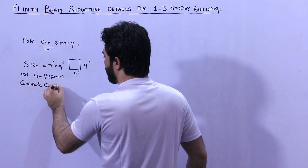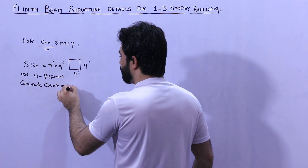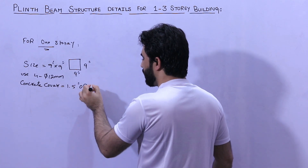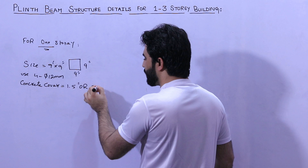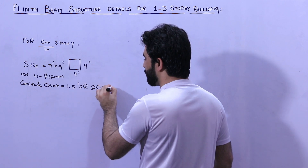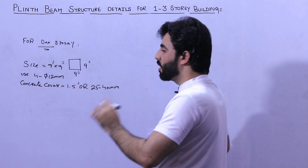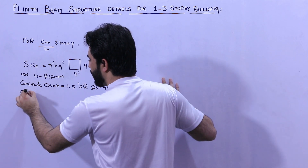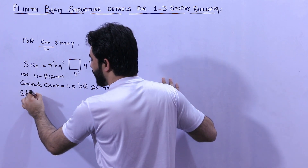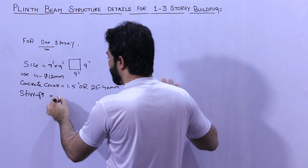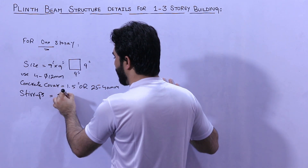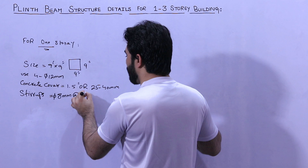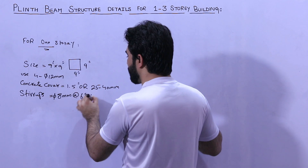Concrete cover should not be less than 1.5 inches, or you can say 25 to 40 millimeter. For stirrups, use eight millimeter diameter steel rod with the spacing of six inches center to center.